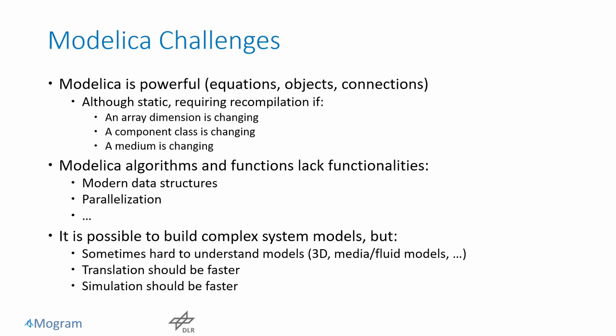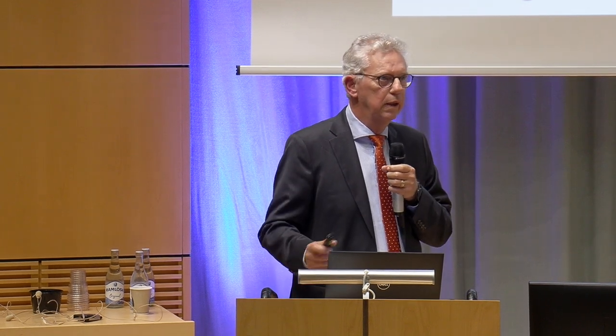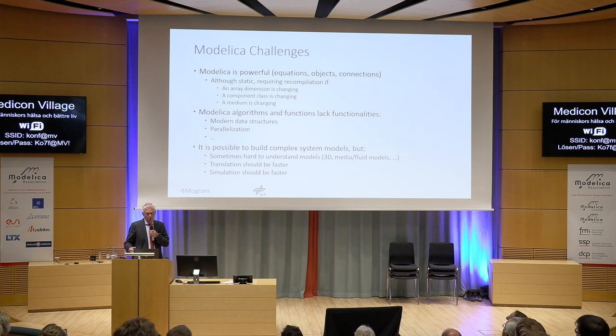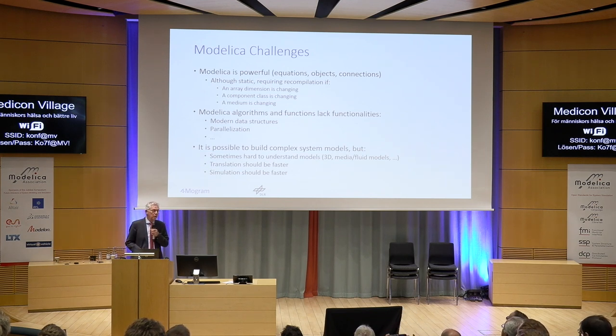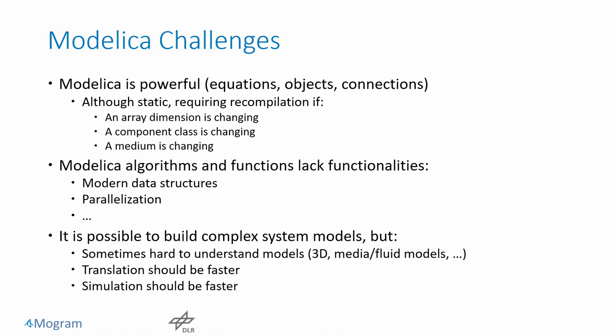Modelica is really powerful and a lot of people are building large models. It has equations, objects, and connections — essential features for building large lumped element models. However, it's very static. It requires recompilation if an array dimension, component class, or medium is changing. We should try to figure out techniques to avoid these obstacles. Modelica also has an algorithmic language where you can define functions, but there are many missing pieces — modern data structures, parallelization, and so on — which are available in Julia.